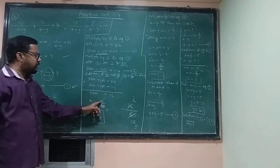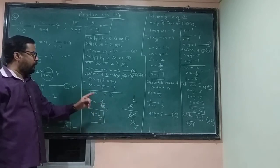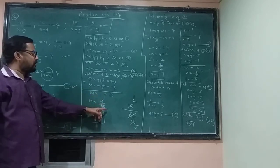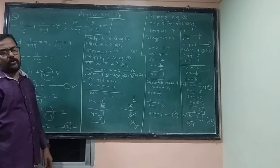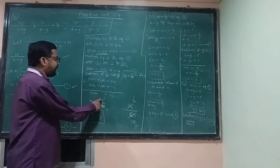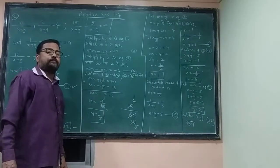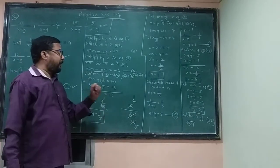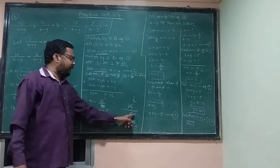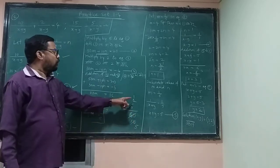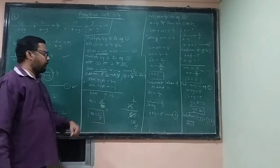So m is equal to 16 upon 80. We simplify: 16 divided by 8 is 2, and 80 divided by 8 is 10, then 2 divided by 2 is 1, and 10 divided by 2 is 5. That's why the value of m is equal to 1 upon 5.